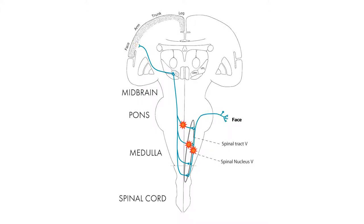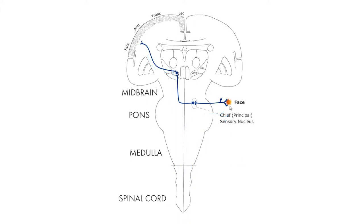Now, let's look at fine touch, vibration, joint position coming from the face. It goes to a different nucleus. It comes straight in and synapses in the chief or principal nucleus, right there in the middle of the pons, then the second neuron crosses. It's always the second neuron that crosses.